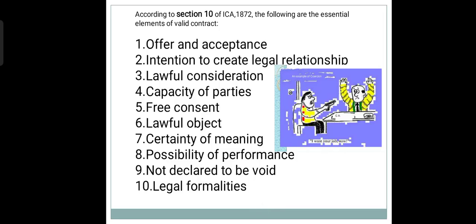Now, the essential elements of a valid contract will be discussed, as mentioned under Section 10 of Indian Contract Act 1872. There are 10 essential elements that need to be present in a contract to make it legally enforceable: offer and acceptance, intention to create legal relationship, lawful consideration, capacity of parties, free consent, lawful object, certainty of meaning, possibility of performance, not declared to be void, and legal formalities.